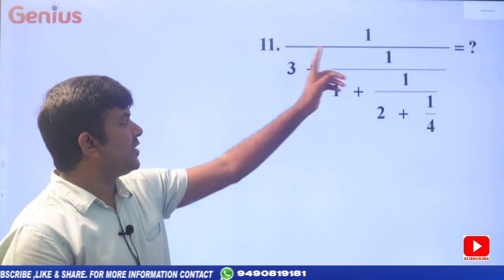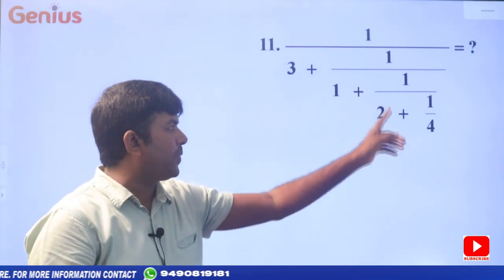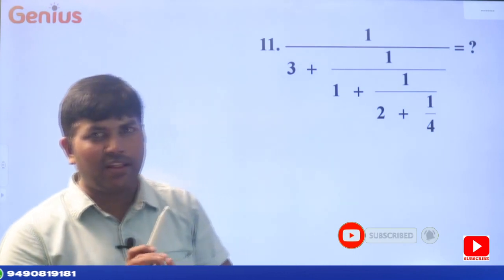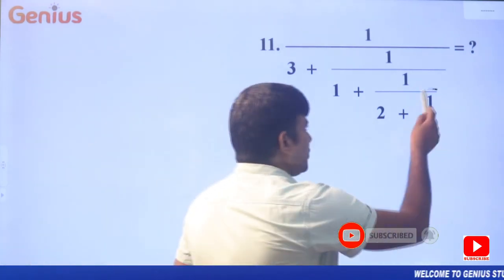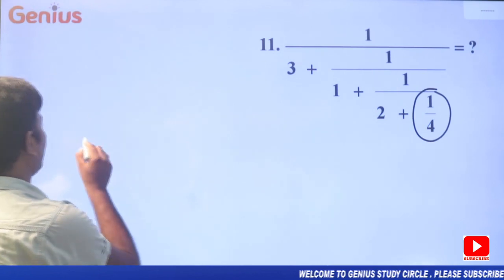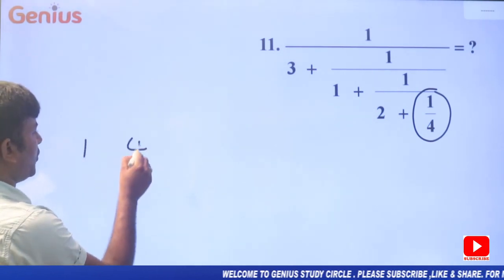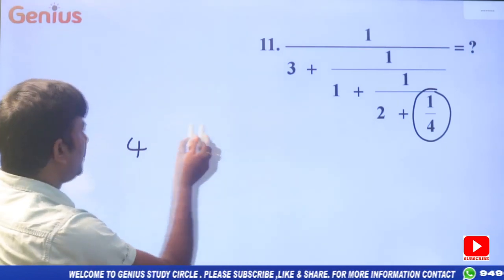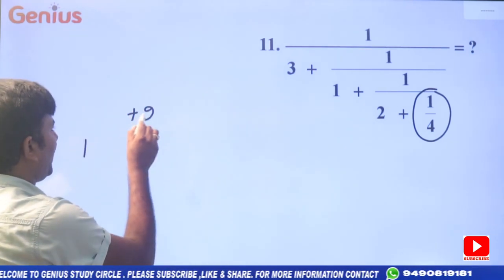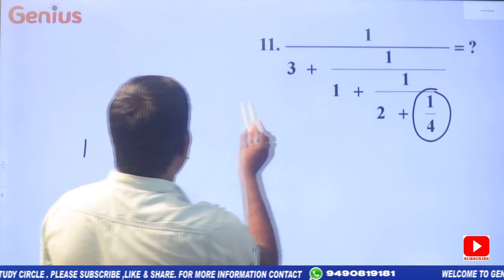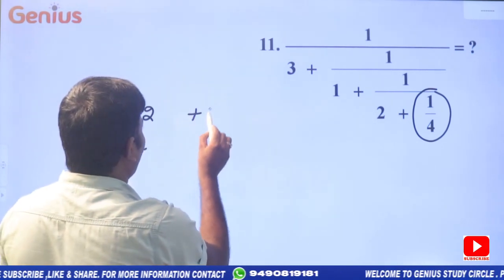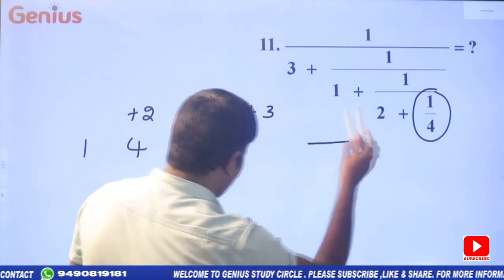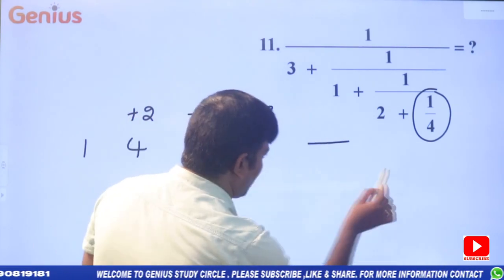For problem 11, we have 1/4 plus others. First write 1 by 4, then write the 4. After that, 2 plus is there, so 4 plus 2. Then 1 plus, then plus 1, then 3 plus, then plus 3. Take 1 space more. Now multiply the value here — we will get the answer. The answer is 48.